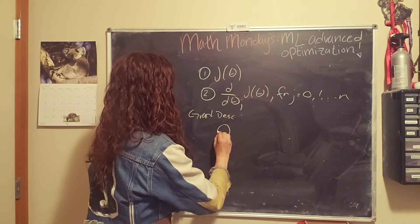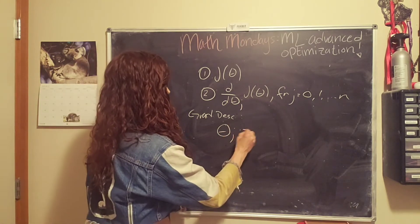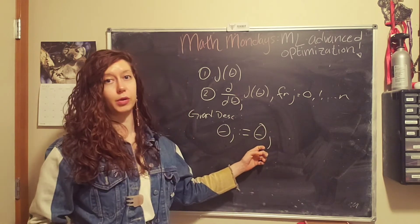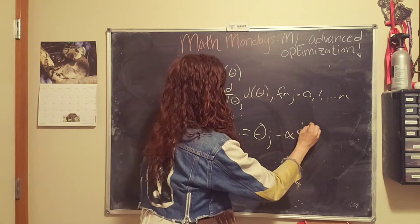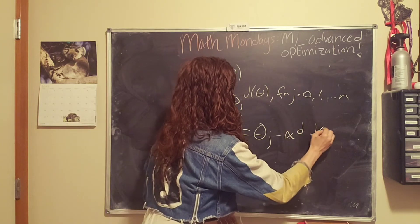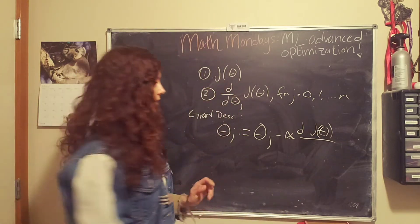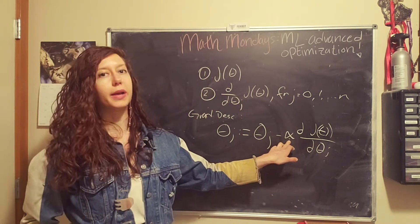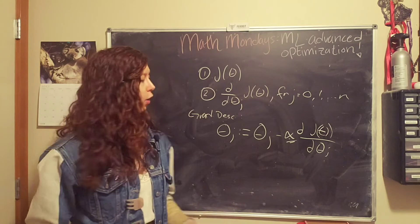And so if we were to write some pseudocode, what that looks like for gradient descent, what that looks like is that we are going to update our parameters based on this formula. So we take the previous value for that parameter, and we subtract the partial derivative of j of theta with respect to that parameter, and we multiply it by a scaling factor, the learning rate, or alpha.